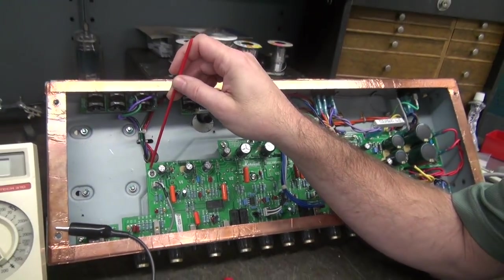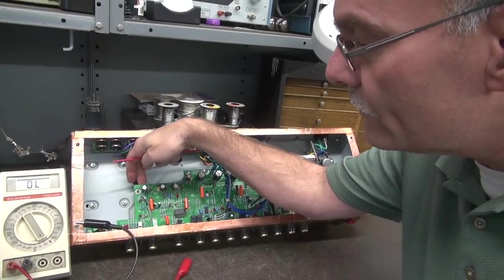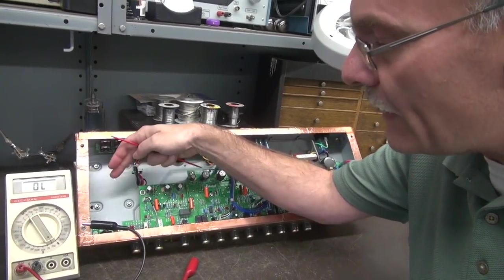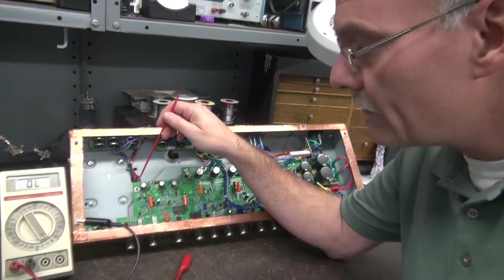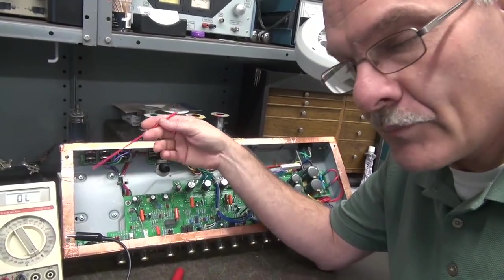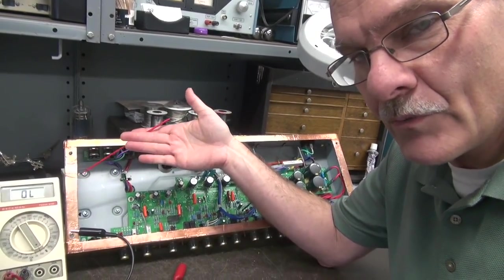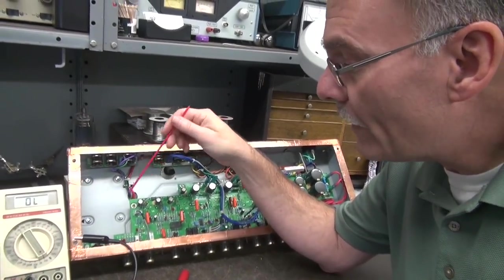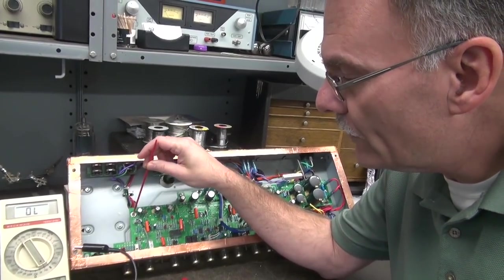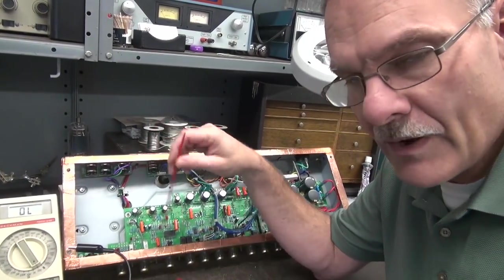Worst case scenario, you could take a pair of pliers underneath here and snap that standoff right off, slide a new one in, and put a screw in from the top. Really wouldn't be a big deal. But I would rather try the easiest approach first. So let's drill it, tap it, mount it, and put a ground runner.